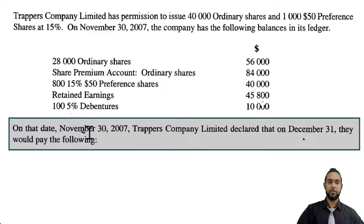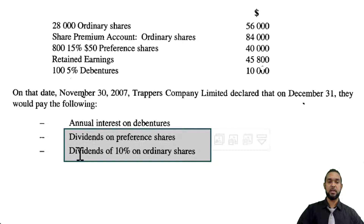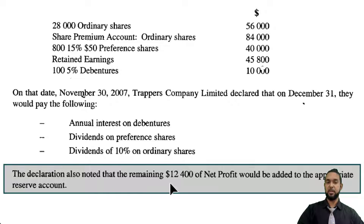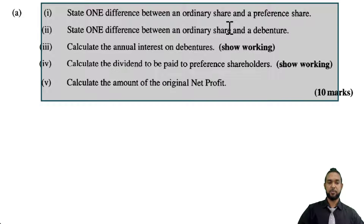On that date, November 30th, 2007, Trapper's Company Limited declared that on December 31st they would pay the following: annual interest on the debentures, dividends on preference shares, and a dividend of 10% on ordinary shares. The declaration also noted that the remaining $12,400 of net profit after appropriations would be added to the appropriate reserve account — that would be retained earnings. Part A has five things: state one difference between an ordinary share and a preference share, one difference between an ordinary share and a debenture, calculate the annual interest on debentures, the dividend to be paid to preference shareholders, and the amount of the original net profit.